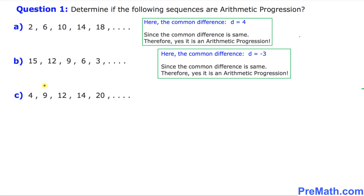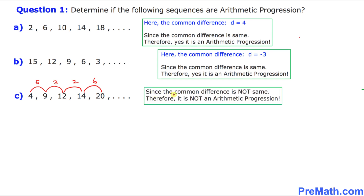Part C — the common difference between the first two terms is positive 5, between the next two terms is positive 3, then 2, then 6. As we can see, we do not have the same common difference — it is not fixed. Since the common difference is not the same, therefore this is not an arithmetic progression. The answer is no.